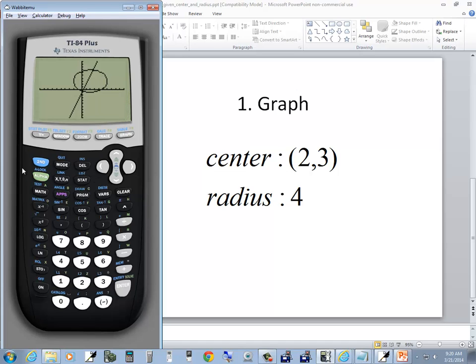Now if you want to clear that circle out, you don't want it there anymore, you do second mode exit out. If we go into our draw menu again, I do second program. See the first one says clear draw. So I do enter on that, and enter again. And now if I go to graph, all I see is my line.